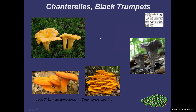The next group is chanterelles — the veined mushrooms. Black trumpets are in this family and they're a favorite of mine. They are very flavorful, they have an amazing odor when you pick them, and there's no poisonous look-alike. So they're a beginner mushroom as well.